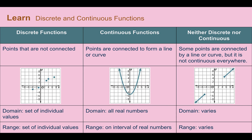Let's learn discrete and continuous functions. Here we're given a table where we have discrete, continuous, or neither discrete nor continuous functions. Discrete functions are just points that are not connected — there's just a bunch of random coordinates not connected by a line. That is discrete. When we figure out our domain and range, they are going to be individual values — the numbers listed out.